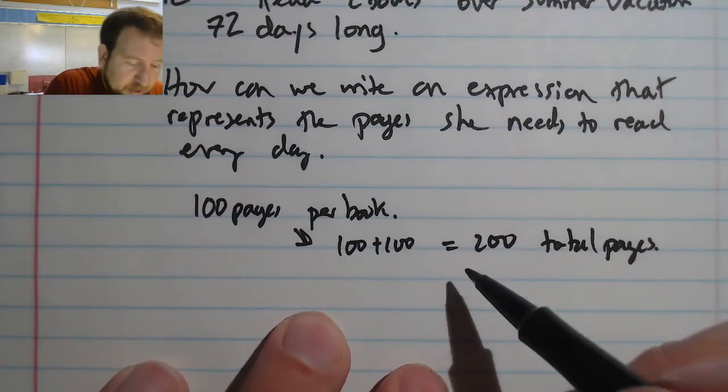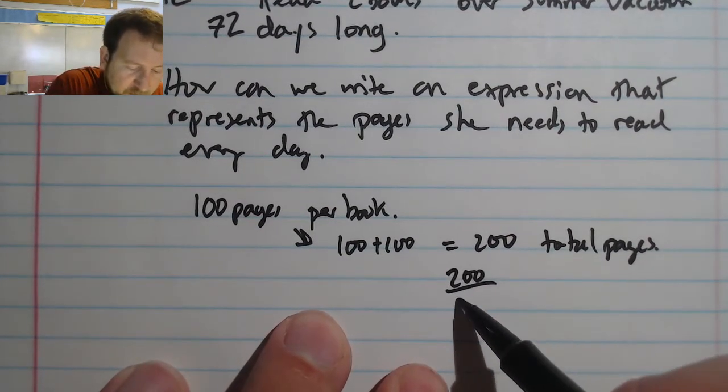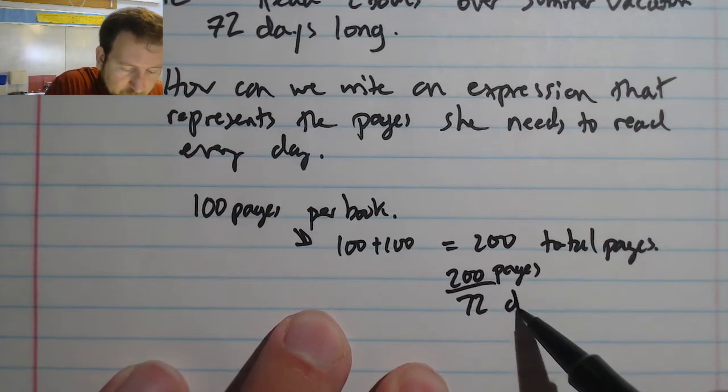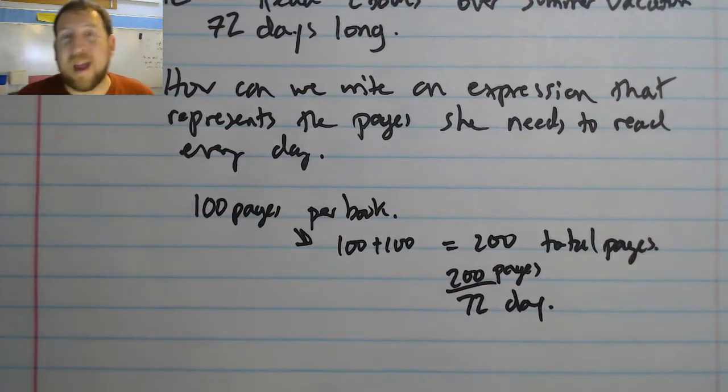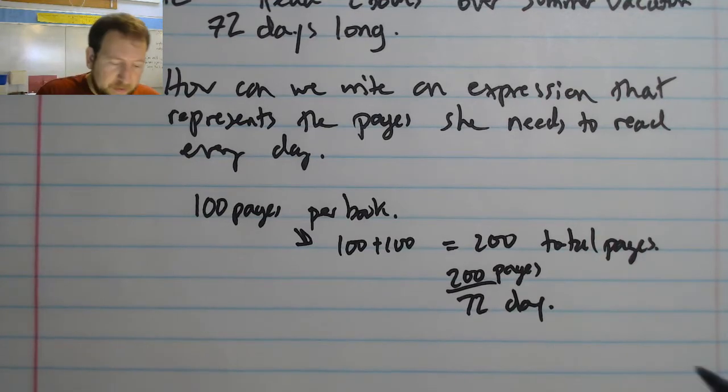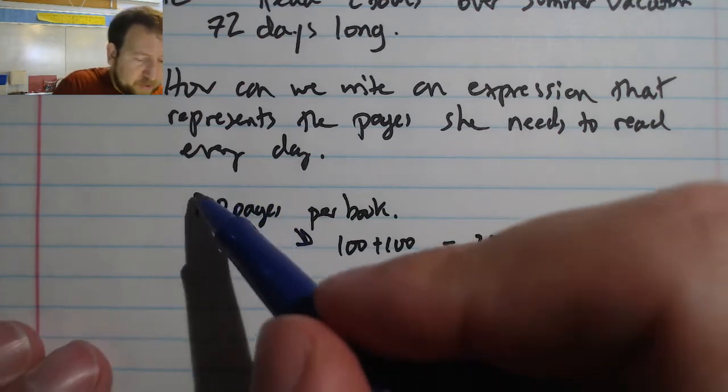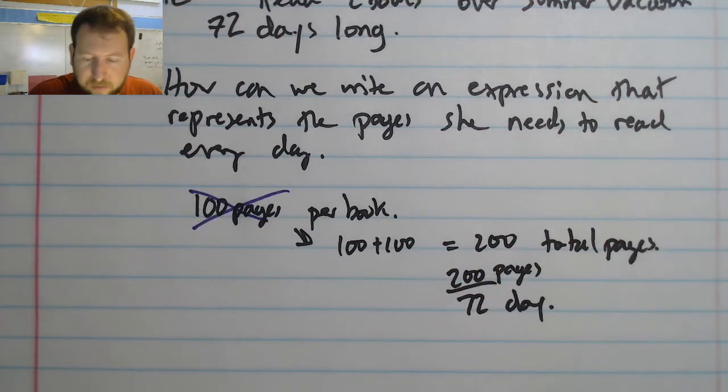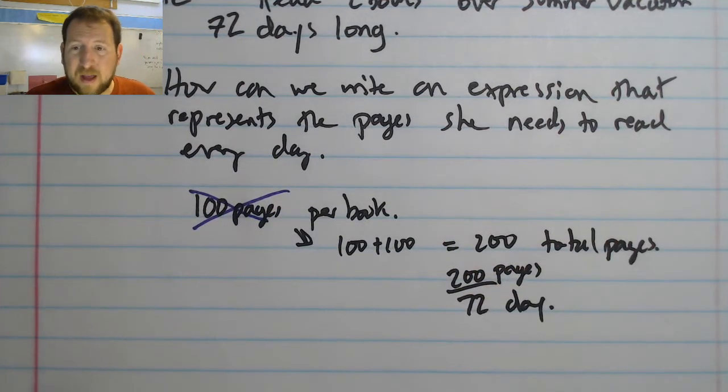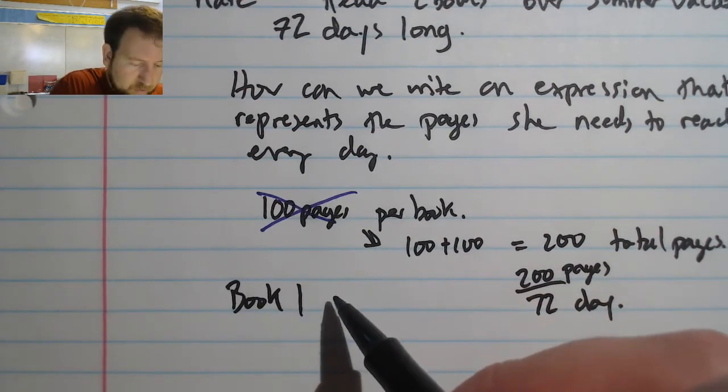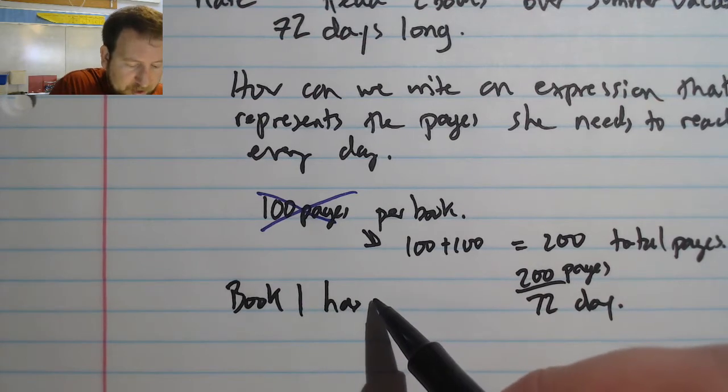And then I could just take 200 and divide it by 72 because I could get pages per day, and that would be really simple. But the problem is we don't know the number of pages per book.